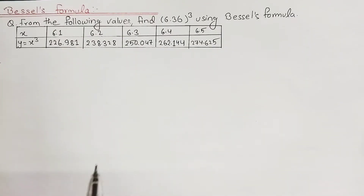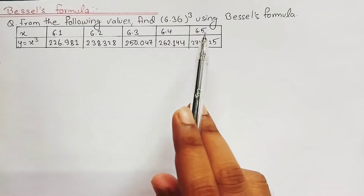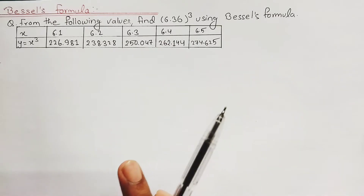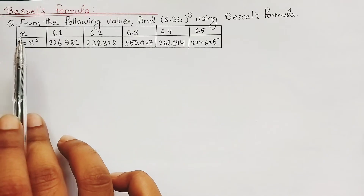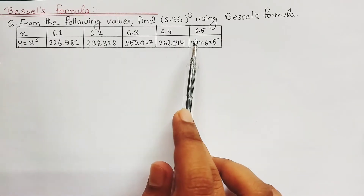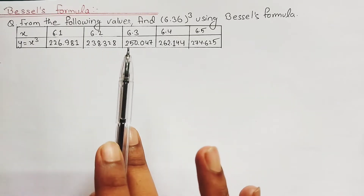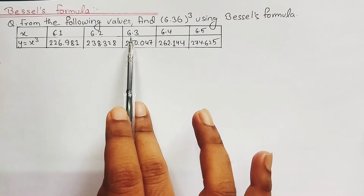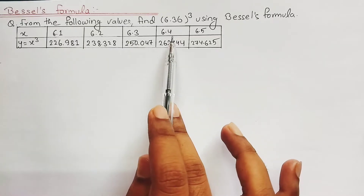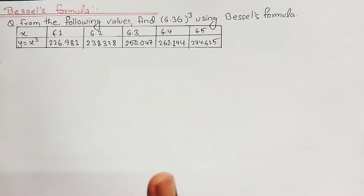Let's begin the solution of this problem. We are asked to find the cube of 6.36 using Bessel's formula. We are provided with different values of x starting from 6.1 to 6.5, and similarly the corresponding values of y. You can see that 6.36 lies between 6.3 and 6.4. So let's first get familiar with the Bessel's formula and then solve this problem.